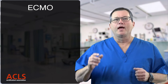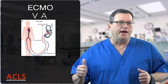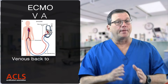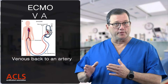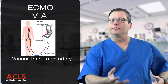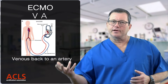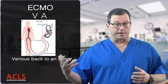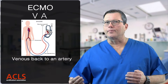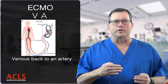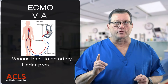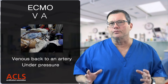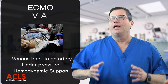The second type of ECMO is VA ECMO. In this case, we're going from venous back to an artery — taking the blood from a vein, sending it to the machine, getting it oxygenated and cleaned, then returning it to the patient's artery under pressure, thus providing the patient with some hemodynamic support.